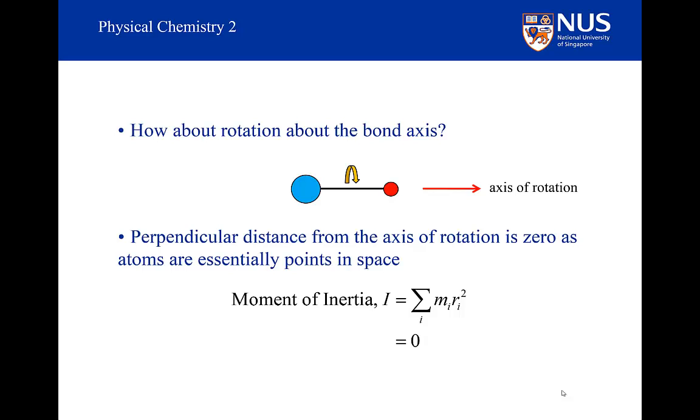This means that the J equals 1 rotational state that would be at 2B would be at a very large energy. It would thus take a very large energy to excite a transition between any rotational states. For the idealized diatomic of point atoms, the energy required would be infinite. For this reason, we do not consider transitions between energy levels around the internuclear axis.